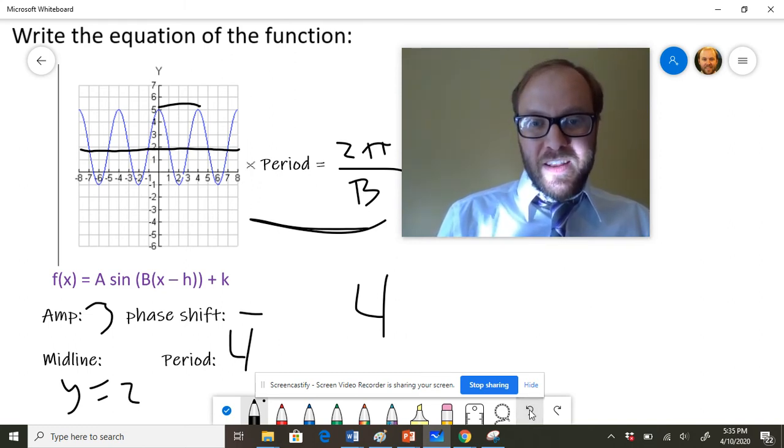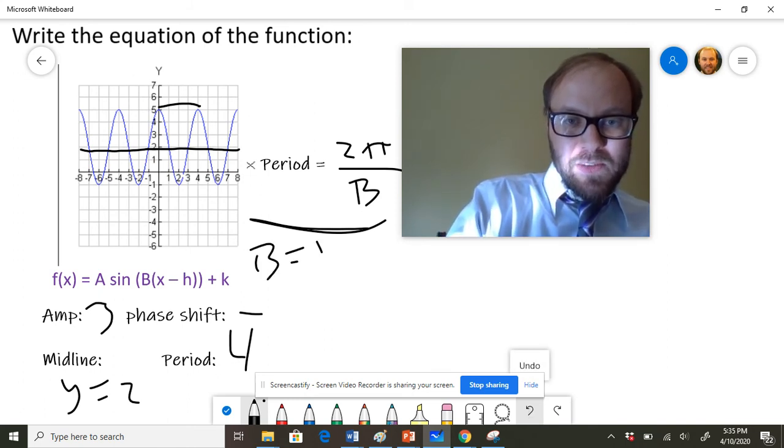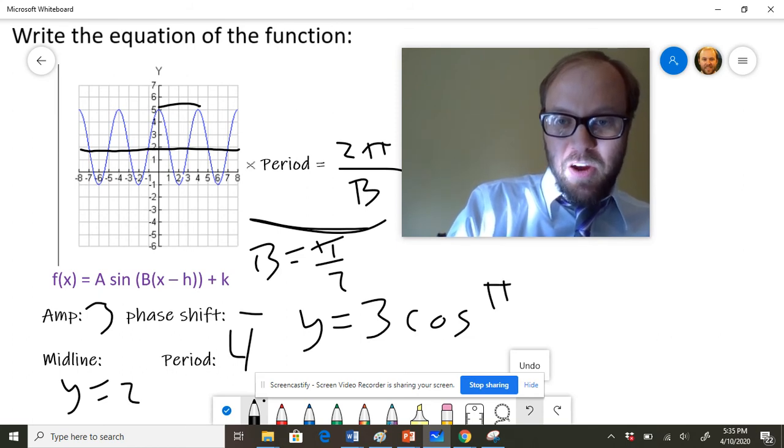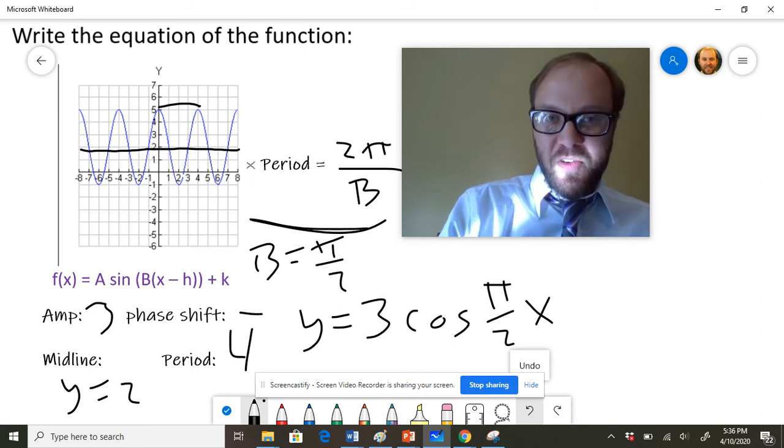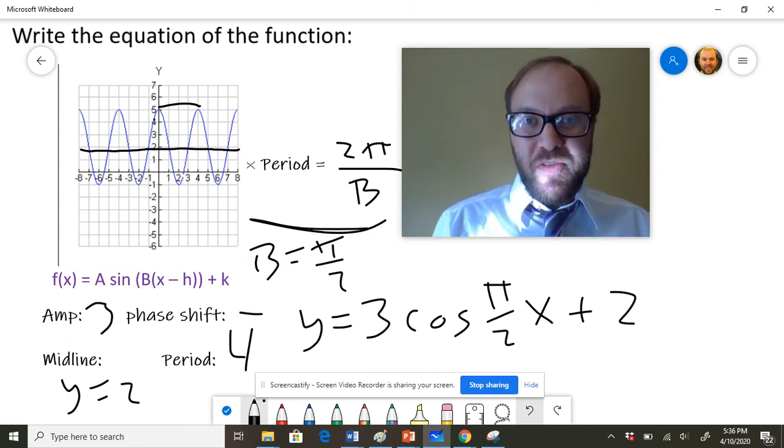So let's go through this final equation here and put this together. My b value is π over 2. All right, so my final equation: y equals—the amplitude is three. We're going to do a cosine function. The b value is going to be π over 2. We don't need to shift it any, so it can just be π over 2 times x. And then, because the midline is at y equals 2, this whole thing has to be shifted up two units.